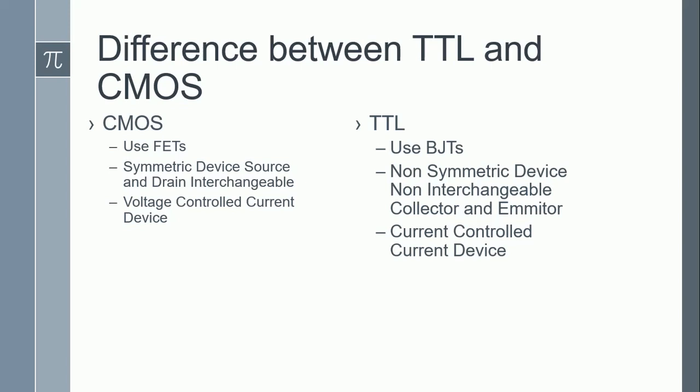Comparatively, when we look at TTL, TTL uses BJTs and BJTs are essentially current-controlled current devices. The current that is controlled is IC, whereas the current which controls it is IB. IC is the collector current, whereas IB is the base current.